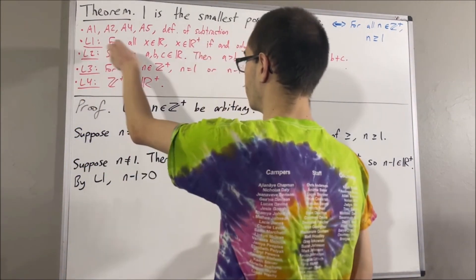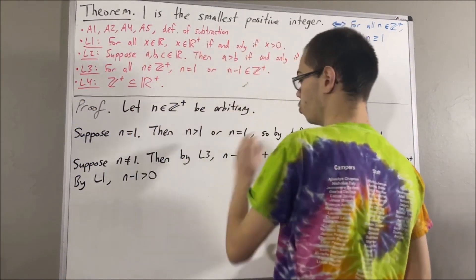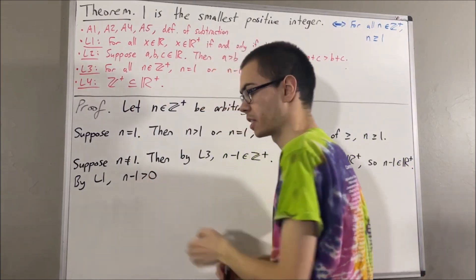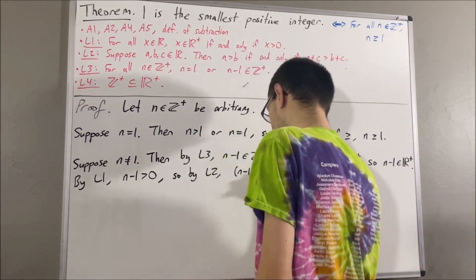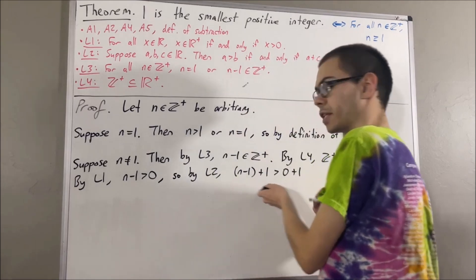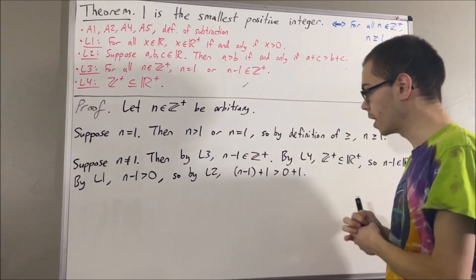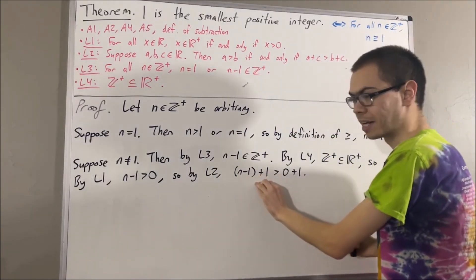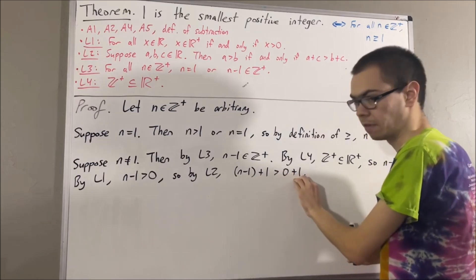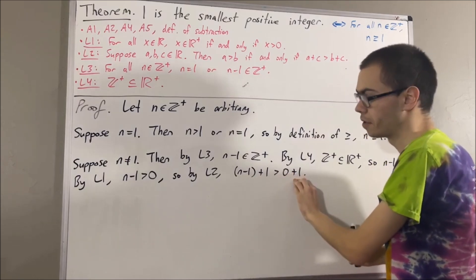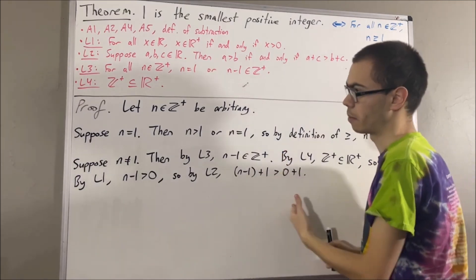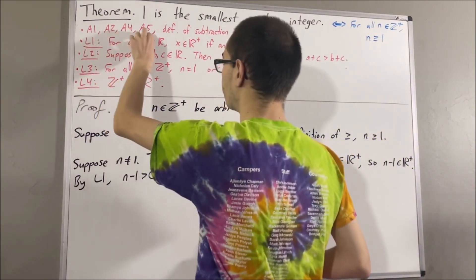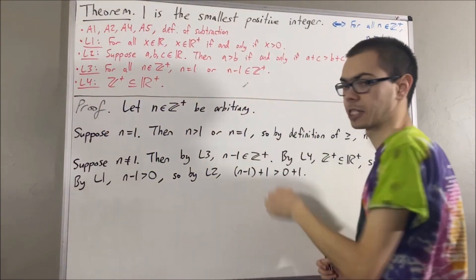According to L2 we can take this inequality and add one to both sides. This should simplify the left-hand side down to n and the right-hand side down to one, and we can show that happens by applying axioms 1, 2, 4, 5, and the definition of subtraction.